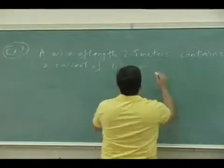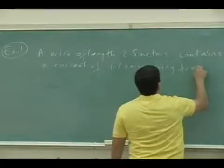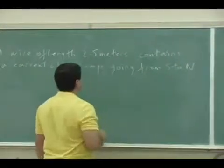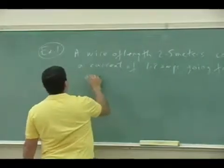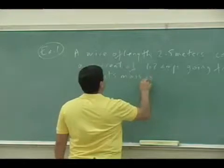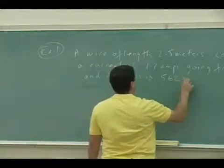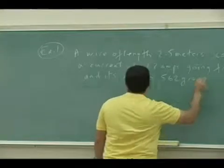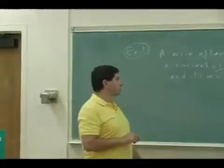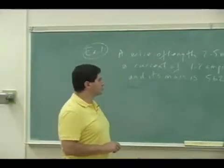Going from south to north. So wire of length 2.5 meters contains a current of 1.2 amps going from south to north and its mass is 562 grams.